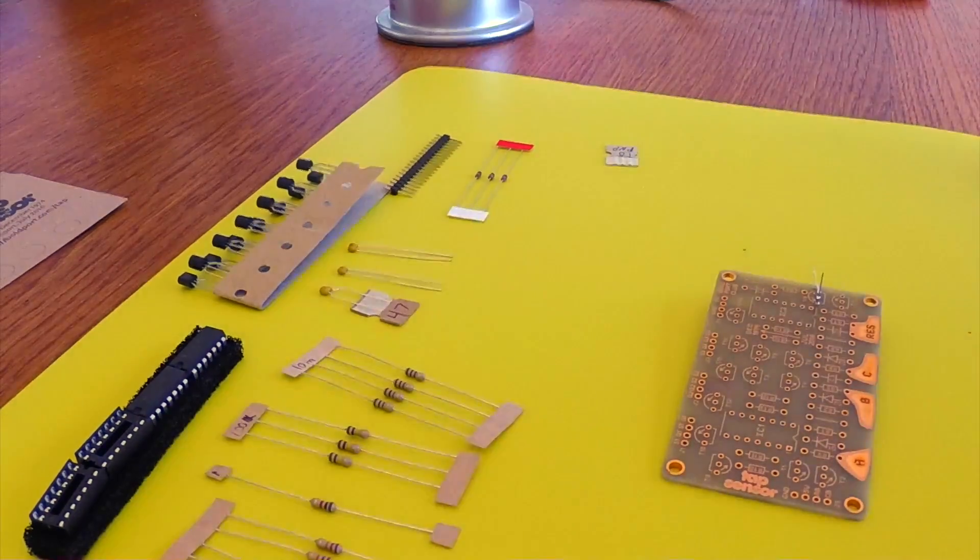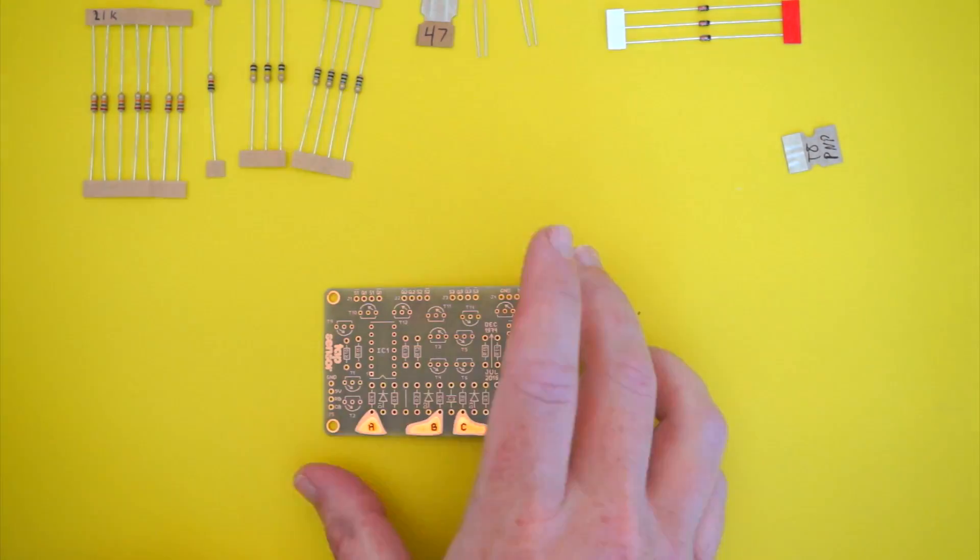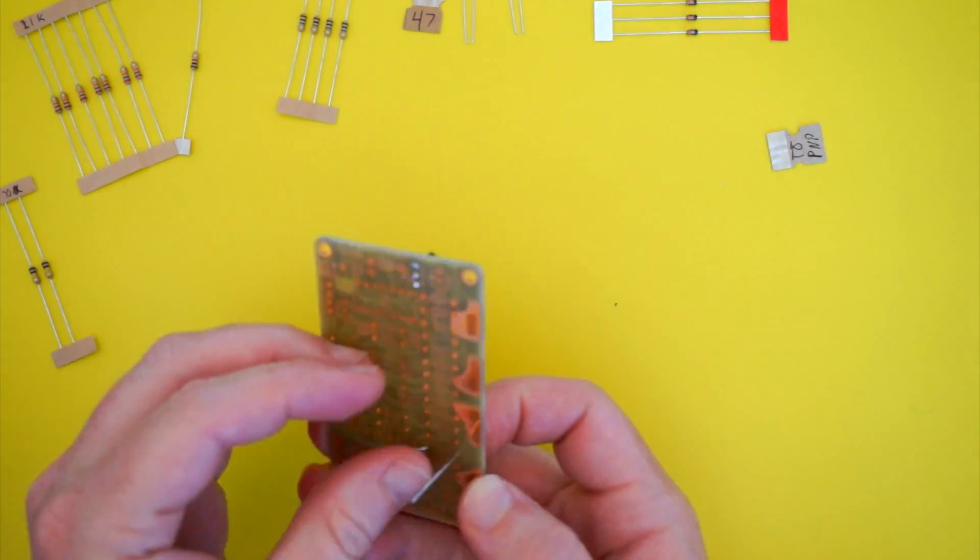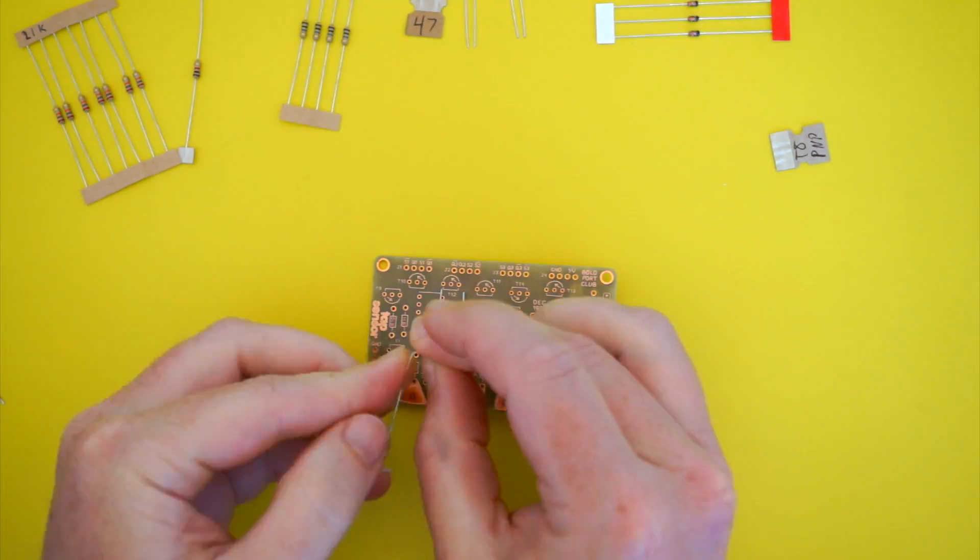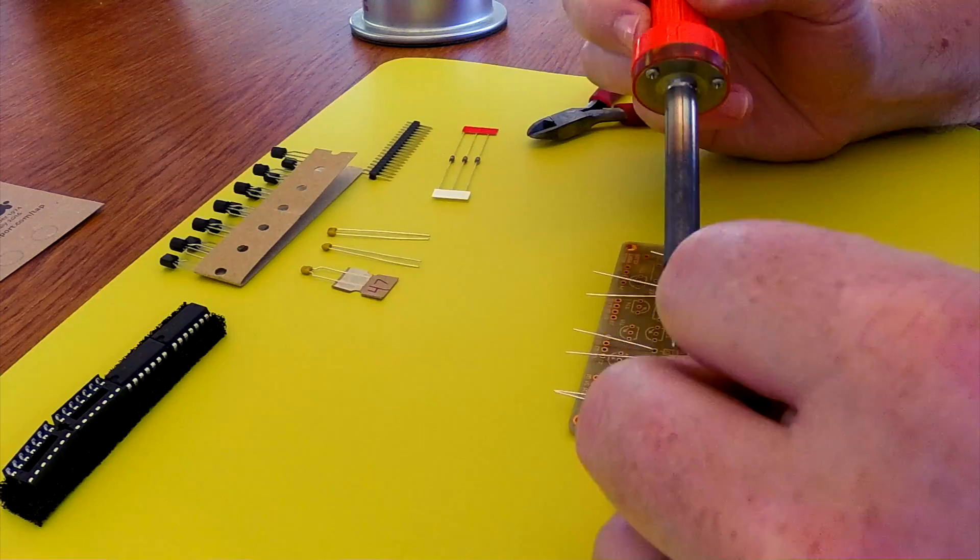Now the board comes as a kit that you'll have to assemble yourself, but it's a quick build that you can do in under an hour. All you need is a soldering iron, some solder, and some clippers to trim off the extra bits.